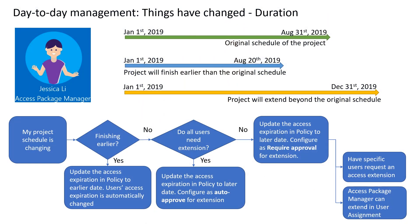With Entitlement Management, you can change the duration of the project. If you anticipate that a project will finish early, especially if you are working with users from an external company, it's critical to remove their access as soon as they complete the project. If the project is going to finish early, you can update the policy access expiration to the new date. Entitlement Management will automatically change the access duration for all your users. If they try to access after this date, they will no longer have access.